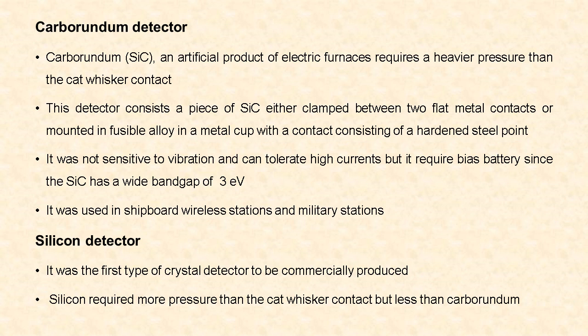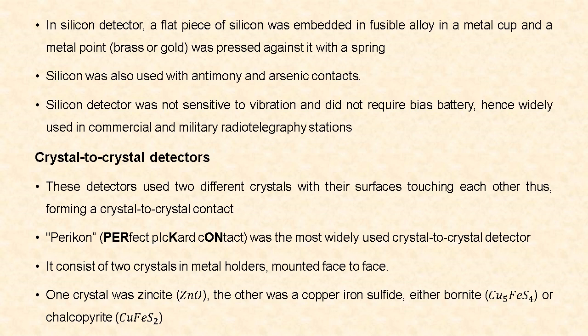Carborundum detectors were used in shipboard wireless stations and military stations. The silicon detector was the first type of crystal detector to be produced commercially. It required more pressure than the cat whisker contact but less than the carborundum detector. A piece of silicon was embedded in fusible alloy in a metal cap, and a metal point — either brass or gold, or also made with antimony and arsenic contacts — was pressed against it with a spring. The silicon detector was not sensitive to vibration and did not require a bias battery, hence it is widely used in commercial and military radio telegraphy stations.